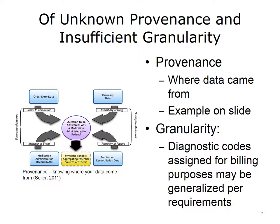One challenge for clinical data is that we may not know the provenance of the data — in other words, where the data came from. The figure in this slide looks at data used to answer whether a medication was administered to a patient. There may be a number of places in the record where that data exists: when the clinician does order entry with an intent to administer; the medication administration record, which can be another indicator of the event; data from the pharmacy on whether the drug is available to be given; and data used for medication reconciliation. None of these data sources is perfect, and they sometimes conflict. When using such data, we should know where it comes from.